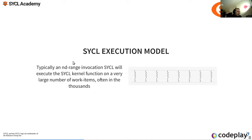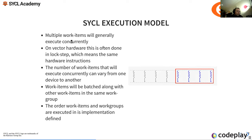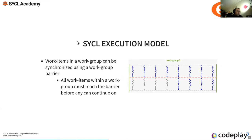In the SYCL execution model, an ND range invocation executes the SYCL kernel function on a very large number of work items — often in the thousands. This allows us to achieve good occupancy and good use of compute units on a GPU or other offloading device. Work items execute concurrently, and we can synchronize across a work group using a barrier.